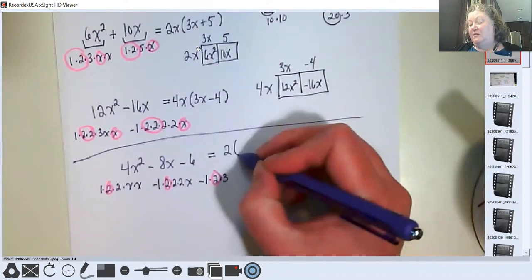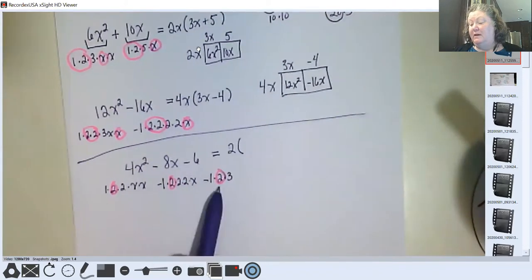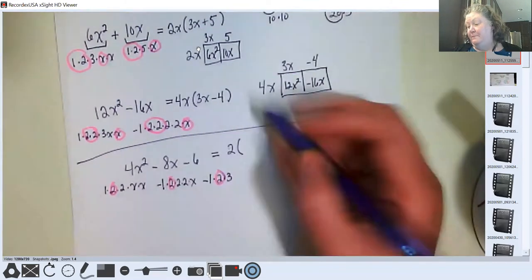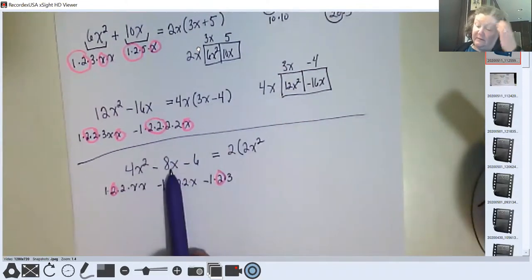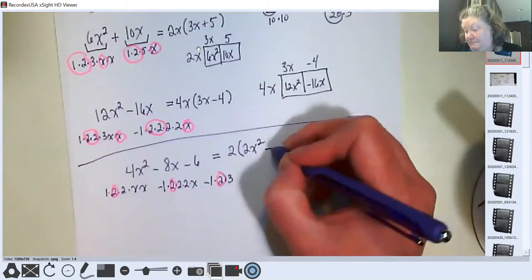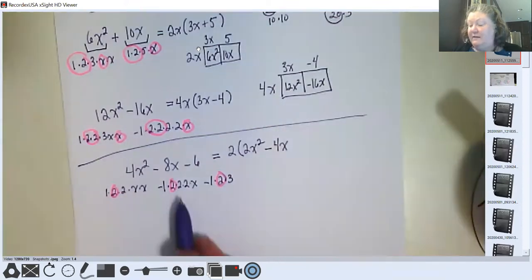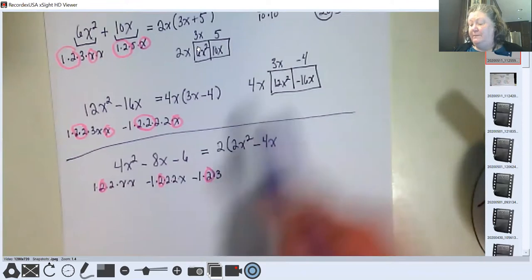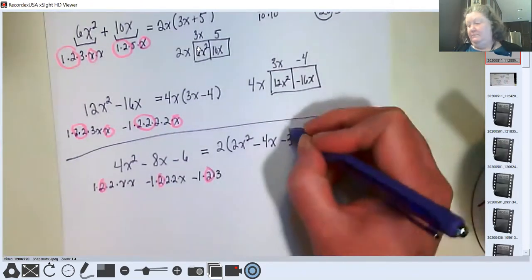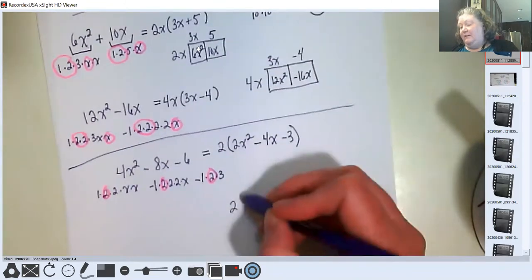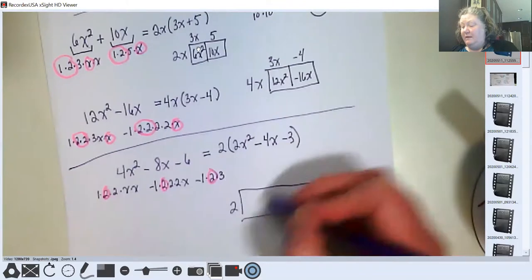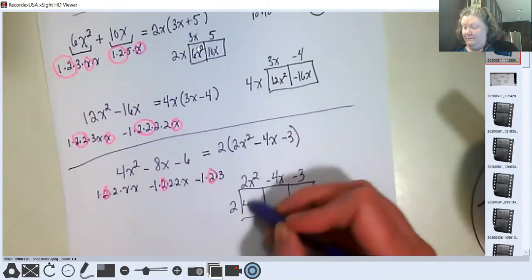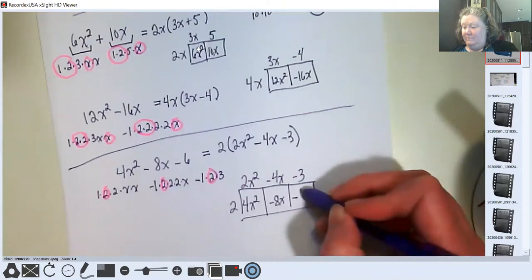The only thing that all three of those have in common is a 2. So when I rewrite this, I get 2 divided out. And if I divide 4x squared divided by 2, I'm left with a 2x squared. And that's what's down here. Negative 8x divided by 2 is going to give me negative 4x. And you can see that here. Negative 6 divided by 2 gives me negative 3. To check it, I'm going to redistribute it by multiplying that 2 by those terms. And see if I get back to where I started. And I do.